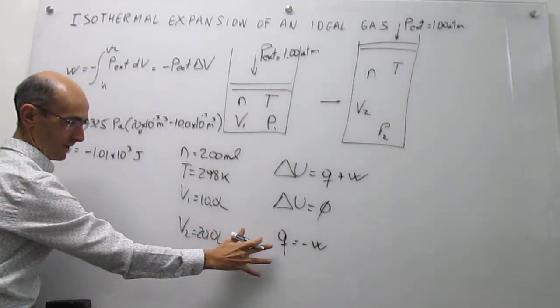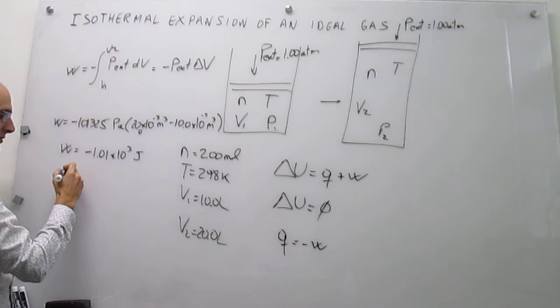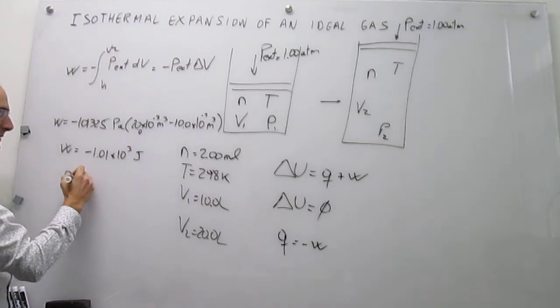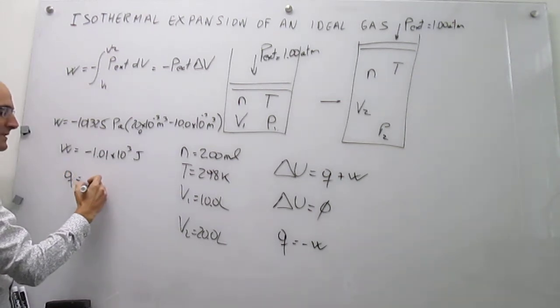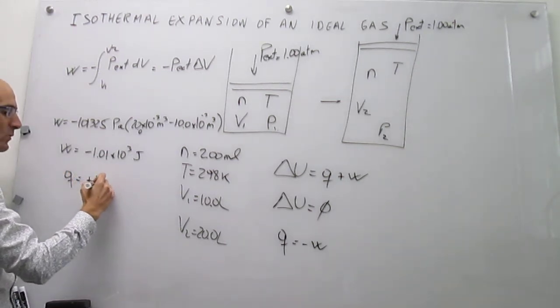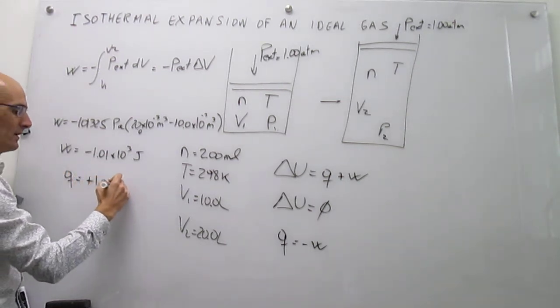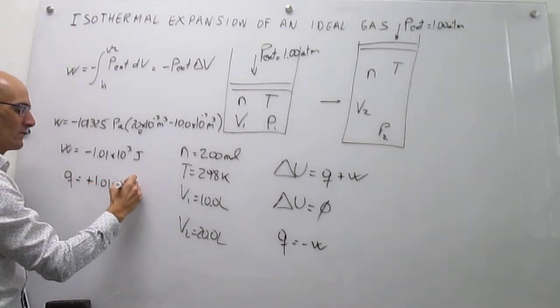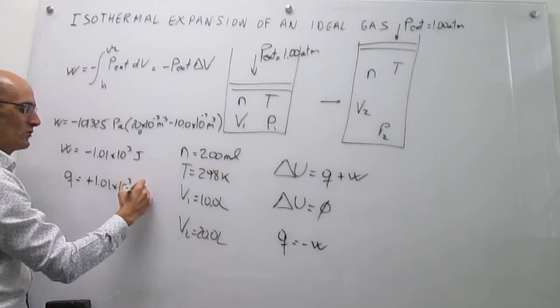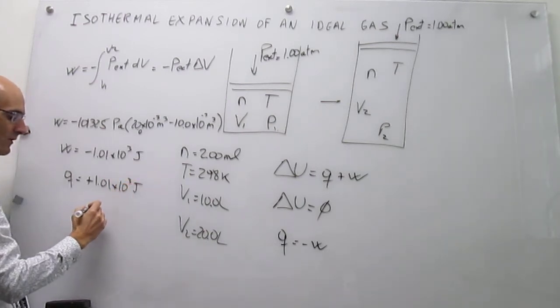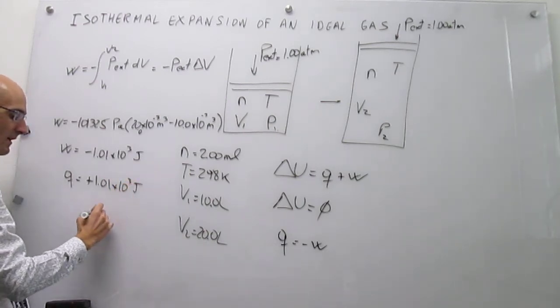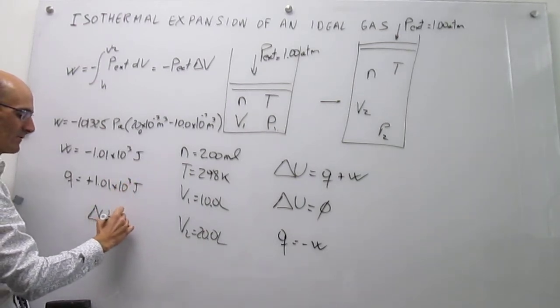Heat is going to be the same number with the opposite sign: plus 1.01×10³ joules, about 1 kilojoule, and again ΔU is equal to zero.